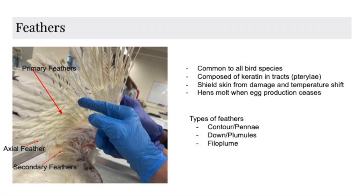There are three types of feathers. Contour, or penne, which sheath the body, wings, and tail. Down, plumules, and florpern, which have sensory receptors next to their base. The feathers of chicken also begin to molt when hens do not produce eggs, which is a trait that has been controlled through selective breeding of chicken.